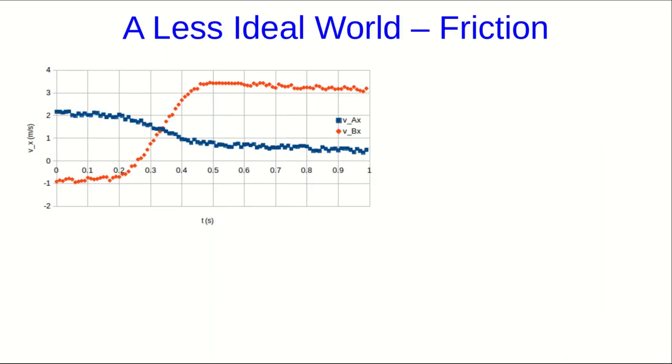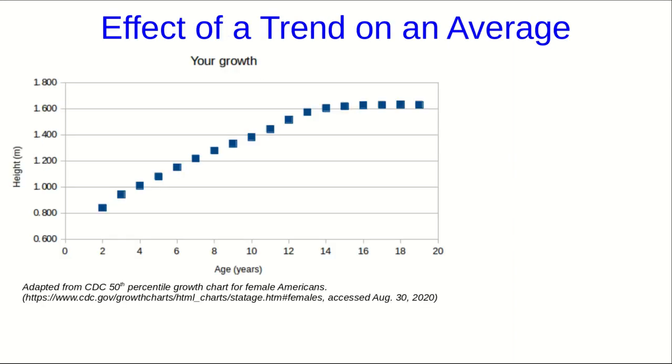Here's what we actually expect our data to look like in the real world, both with measurement uncertainty and with friction. Notice these lines through the velocities are not horizontal because friction is slowing the carts down. So think about what would happen if you calculated the average momentum after the collision using all of the data available from after the collision. You're going to be calculating an average of something that has a decreasing trend. Maybe it's now obvious to you why the friction is going to cause us such a big problem in this experiment, even though the friction is weak.